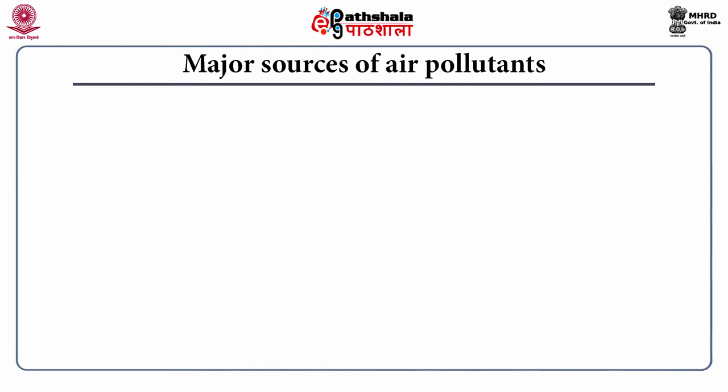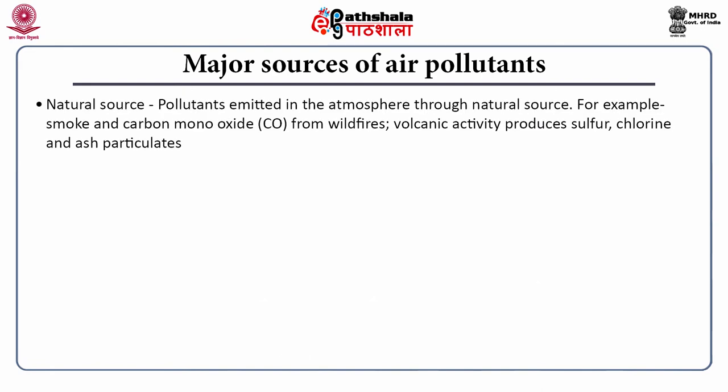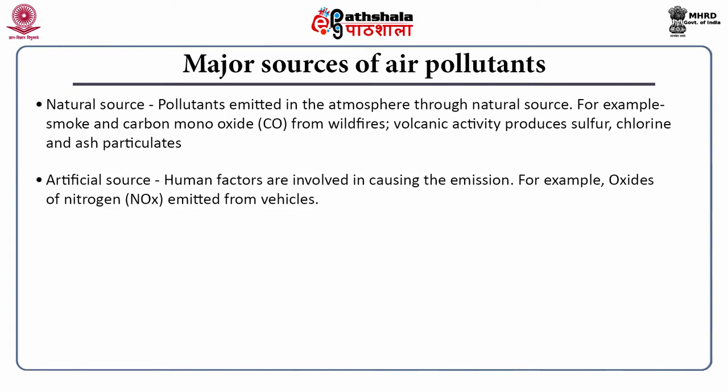Major sources of air pollutants, based on whether they are natural or artificial, can be classified as natural source pollutants and artificial source pollutants. Pollutants emitted through natural sources include smoke and carbon monoxide from wildfires, and volcanic activity that produces sulfur, chlorine and ash. Artificial source pollutants are mainly from human activities — examples are NOx and SOx emitted from vehicles and industries.